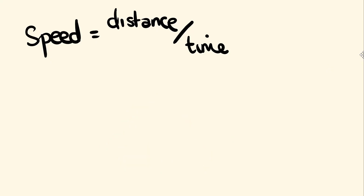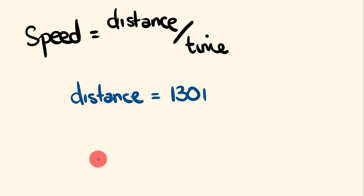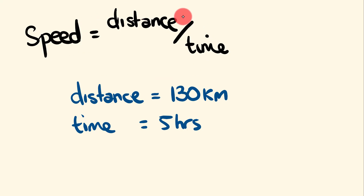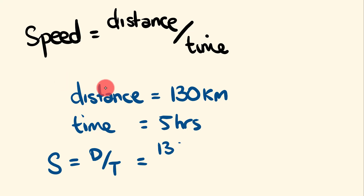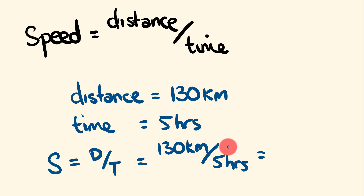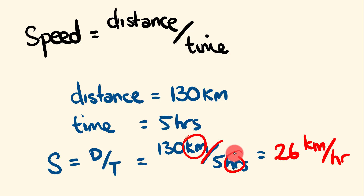Say a car is traveling and the distance it has traveled is 130 kilometers, and the time taken is 5 hours. How fast has it traveled? Using the formula: speed equals distance divided by time. Speed = 130 kilometers ÷ 5 hours. 130 divided by 5 equals 26, and the units are kilometers per hour. So the speed is 26 km/h — a really easy formula to remember.